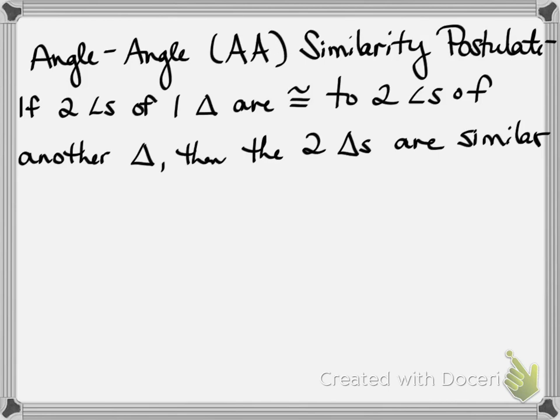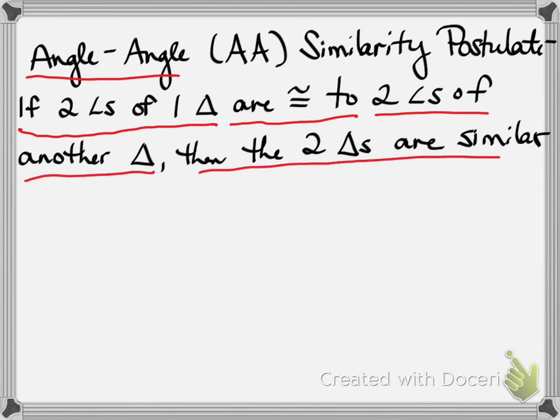Well, we have shortcuts with similarity. I don't have to make sure all the corresponding angles are equal and all the sides are proportional. It's enough if we just have two angles congruent. That's what angle-angle similarity says: if two angles of one triangle are congruent to two angles of another triangle, then the two triangles are similar.